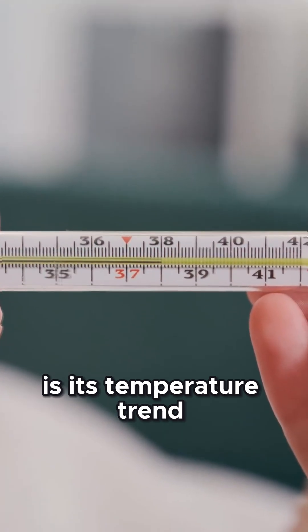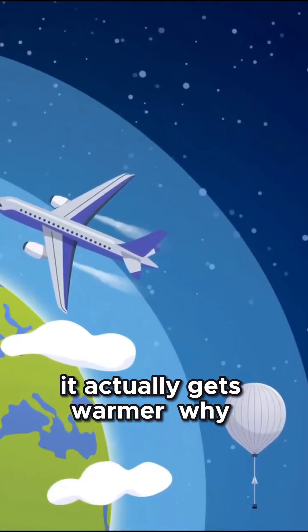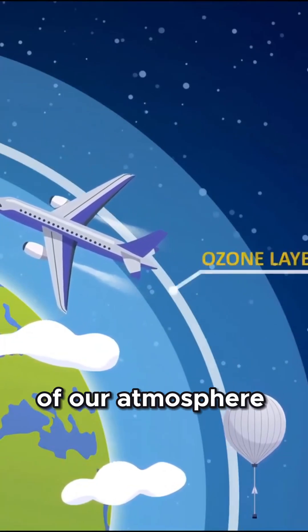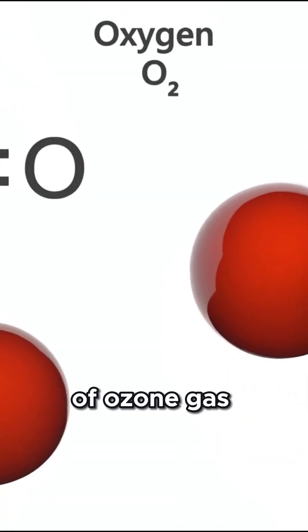Unlike the troposphere, as you go higher in the stratosphere, it actually gets warmer. Why? The answer is one of the most important features of our atmosphere: the ozone layer. This special layer of ozone gas, a molecule made of three oxygen atoms, is concentrated in the stratosphere.